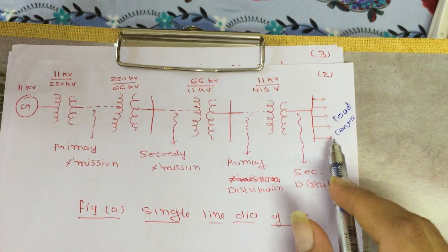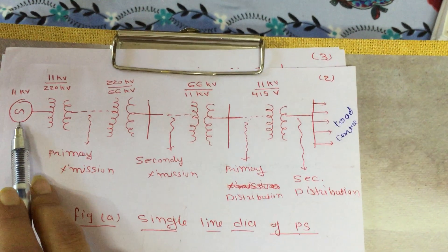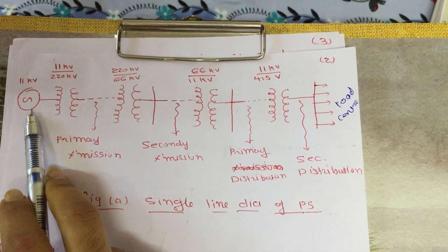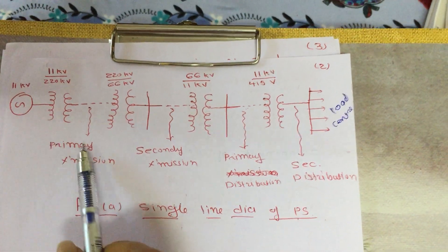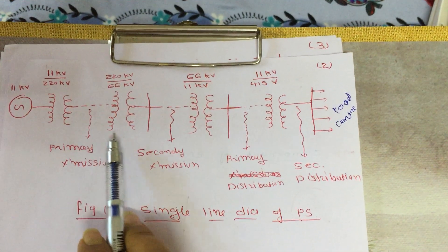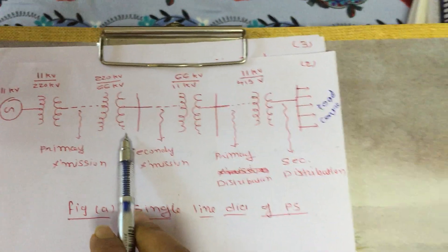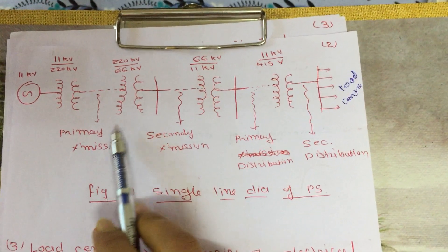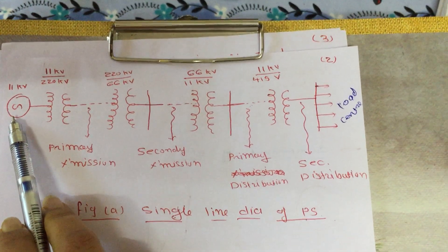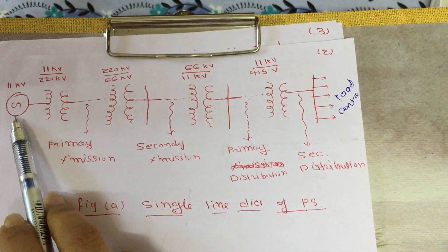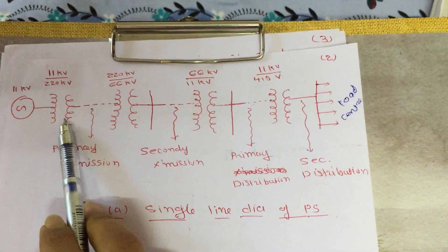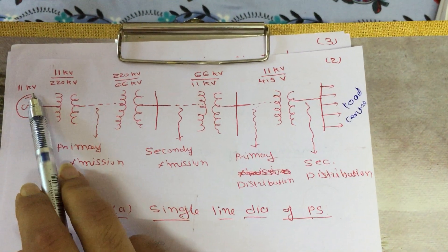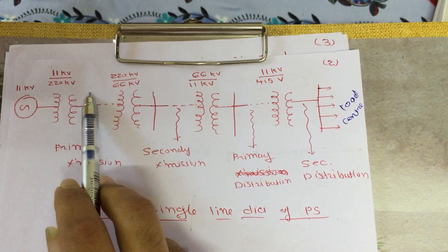The load center is also called the consumer. You can see that generation is available at 11 KV. Different voltage conversions — step up or step down — are made to reduce losses. Using a step-up transformer, we convert 11 KV to 220 KV.